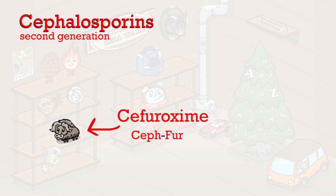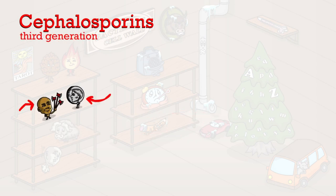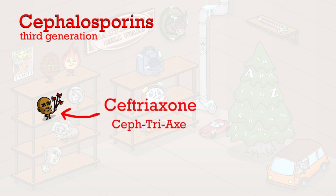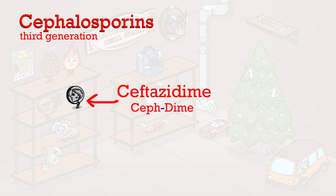The third shelf represents third generation cephalosporins, of which two medications are being represented. Ceftriax reminds you of ceftriaxone. And the dime — a 10-cent American or Canadian coin, which in this case will be pronounced as 'deem' — represents ceftazidime.